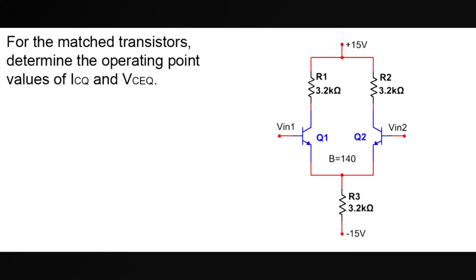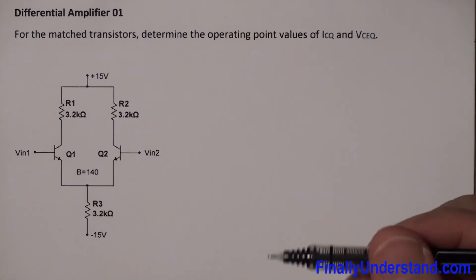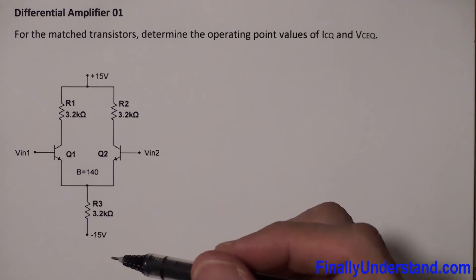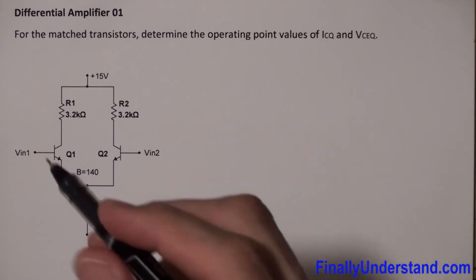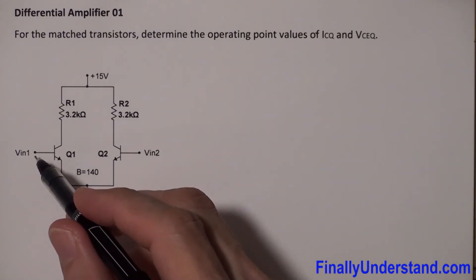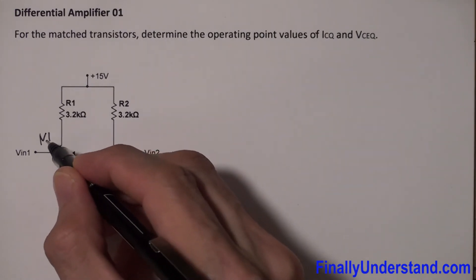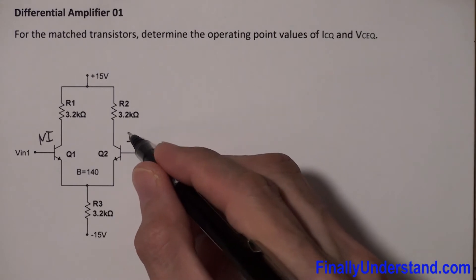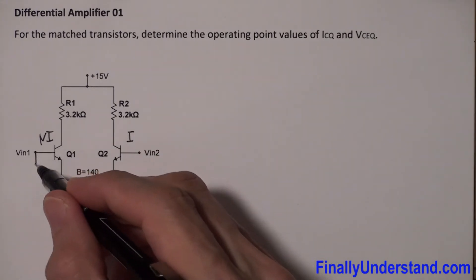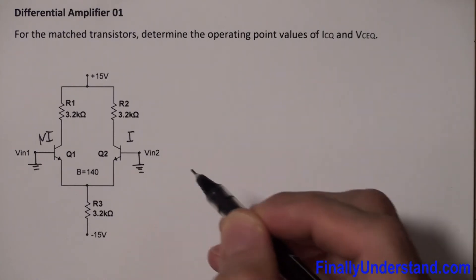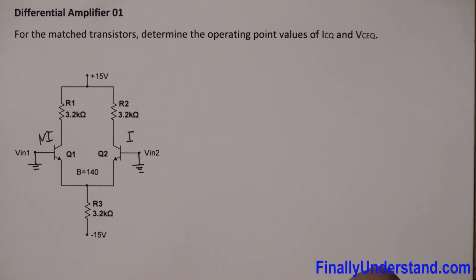Let's take a look at this example. Before I start the DC analysis, you're supposed to remember that in order to perform the DC analysis, we simply assume that both inputs — the non-inverting input and inverting input — are grounded. We reduce the input signal to zero; in other words, we ground it for DC analysis.